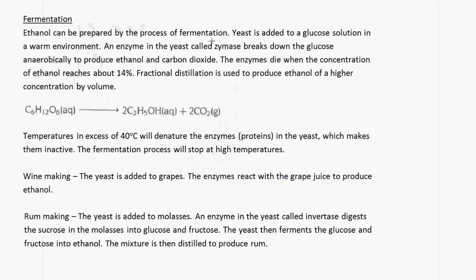The next thing you need to know is fermentation. Ethanol can also be prepared by a process of fermentation — specifically anaerobic fermentation, which is oxidation without the presence of oxygen. Yeast is added to a glucose solution in a warm environment. An enzyme in the yeast called zymase breaks down the glucose anaerobically, that is without oxygen, to produce ethanol and carbon dioxide. You will see bubbles of carbon dioxide being produced in the solution.